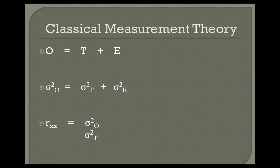When someone is measured with an instrument, how do we know the measurement was right? Classical measurement theory states that an observed score O is equal to your true score T plus error E. Ideally our observed score would be exactly equal to our true score and error would be zero. Sometimes we score better than our true score, giving positive errors, and sometimes our observed score is lower than our true score, giving negative errors.